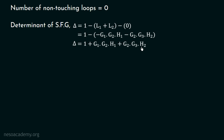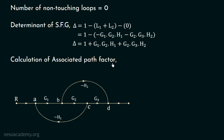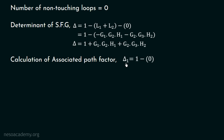We will now move on to the calculation of the associated path factor. To calculate the associated path factor, we need to erase the forward path. In the given signal flow graph, there is only one forward path, and if we erase that path, the number of isolated loops will be equal to zero, because both loops L1 and L2 get destroyed. That's why the value of delta1 equals 1 minus zero, and so the associated path factor delta1 is equal to 1.